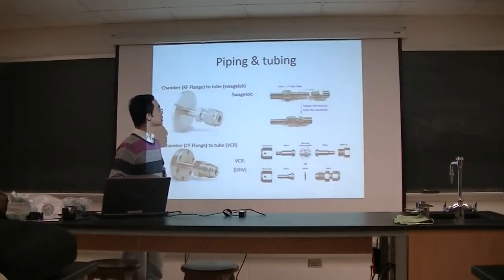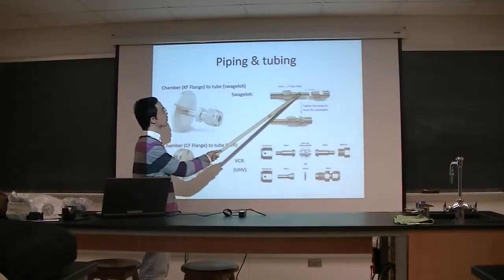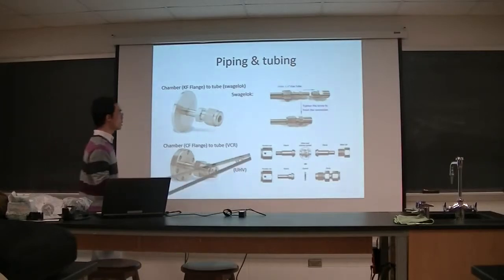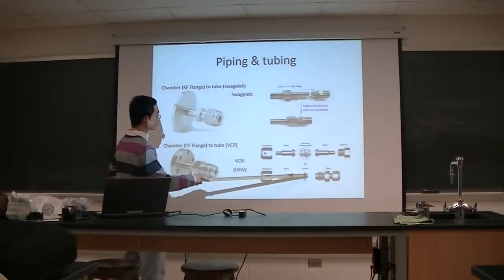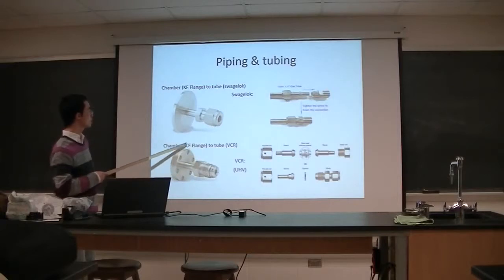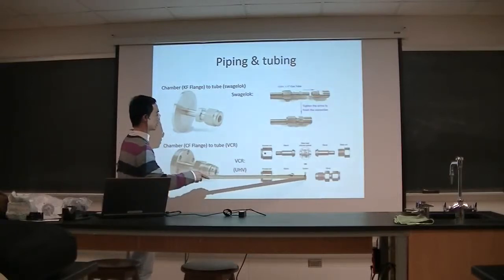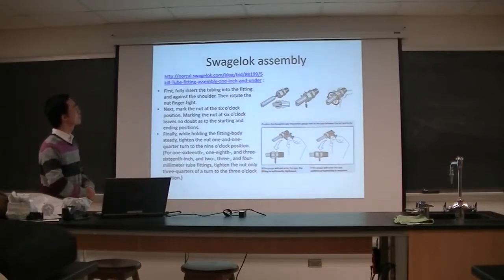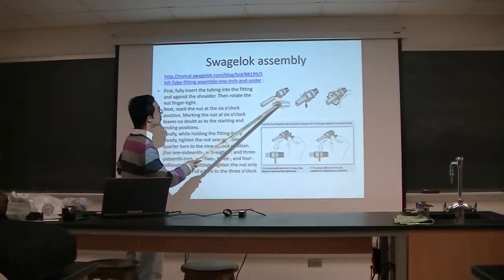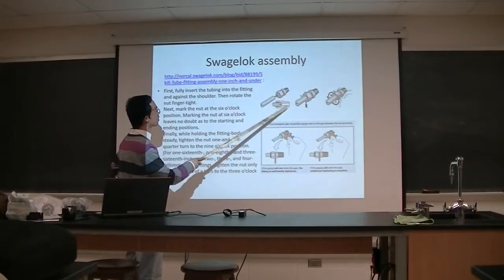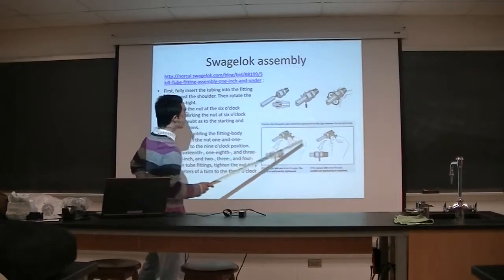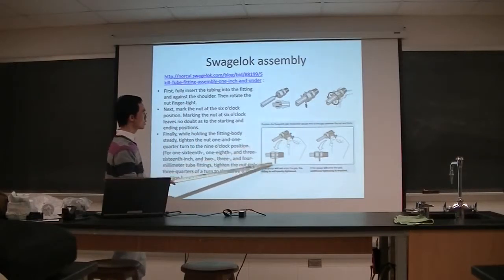For Swagelok, you have a tube with two ferrules inside. You tighten them up with wrenches. For VCR, similar to the CF flange, you have a gasket in between and you tighten the two parts together to press the gasket. In the Swagelok assembly: first, put the fittings on the male part, then insert your pipe and start to tighten. After tightening, use a spacer to check the gap between the two ferrules.